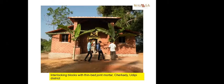Here is another example of a building in Udupi, which would otherwise have been done in laterite stone, but interlocking blocks with thin joints were available and were used to construct this building.